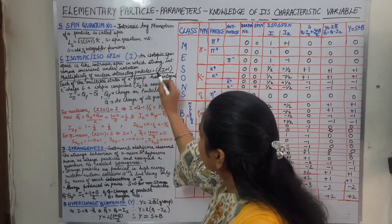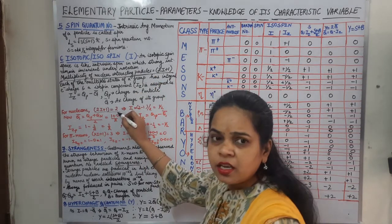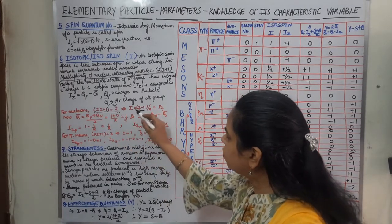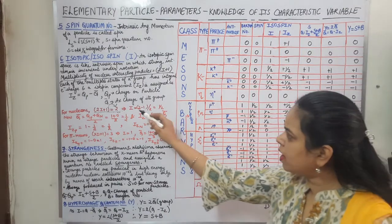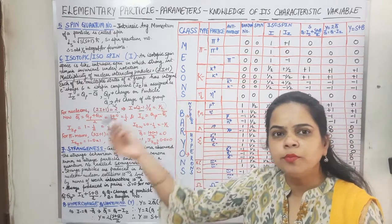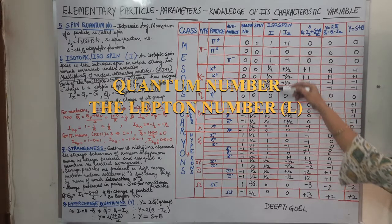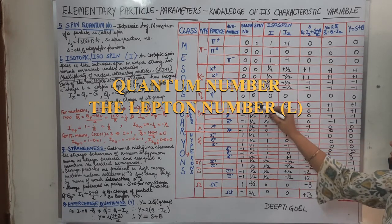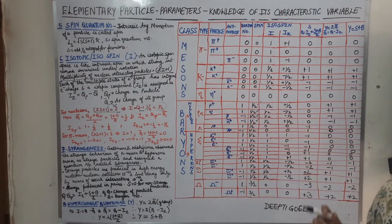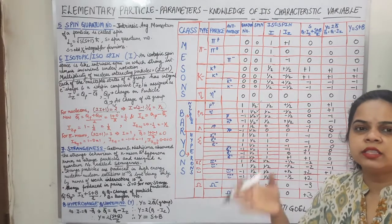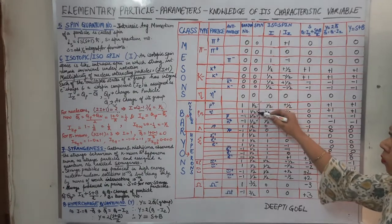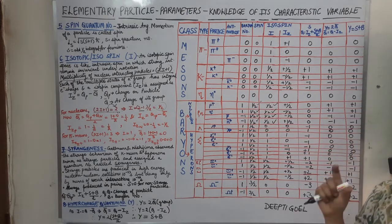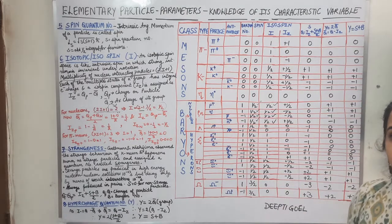Using the formula 2I+1 equals multiplicity: for nucleons multiplicity is 2, so 2I+1=2, giving I equals half. The I value is half for both proton and neutron. The same value of I is taken for the antiparticle. Both proton and neutron have I equal to half, and the antiparticles also take the value of half, since they again form a two-membered group.